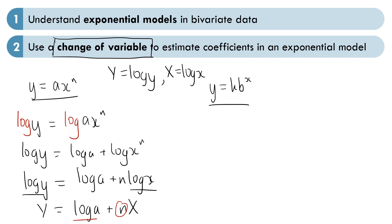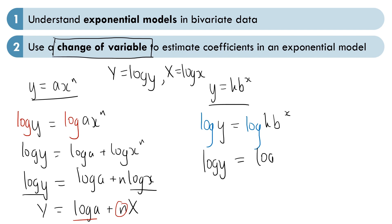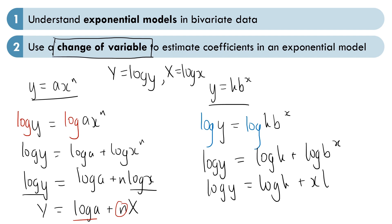We can do the same for the other equation. So log y equals log of kb to the power of x. Applying the same laws of logarithms, we get log k plus log of b to the power of x. Bringing the power of x down, we have x log b. Once again, this is a linear equation, but notice that this time we have log y but x remains the same.